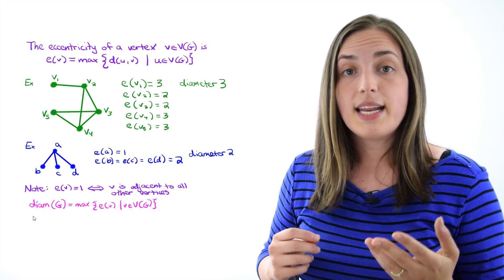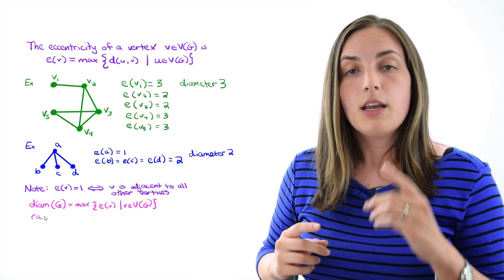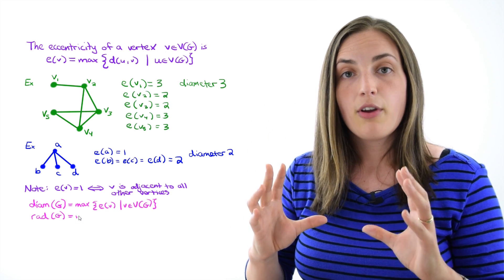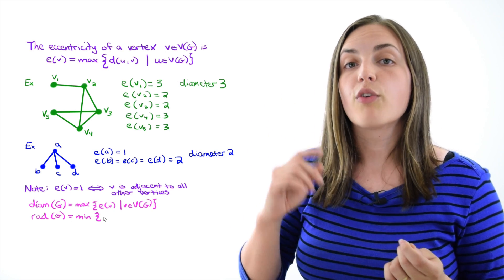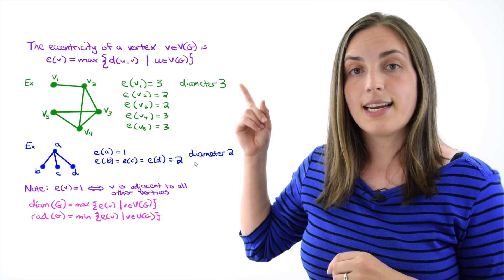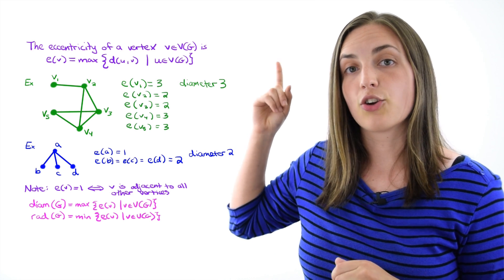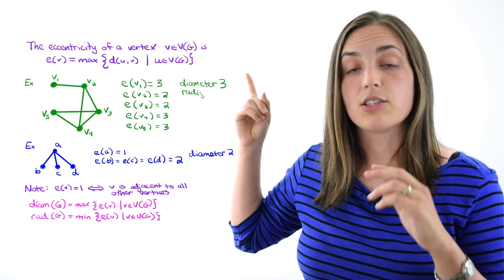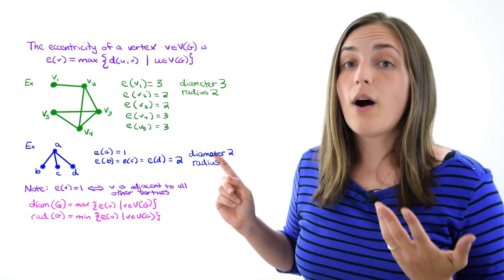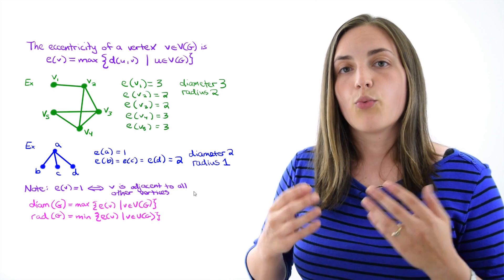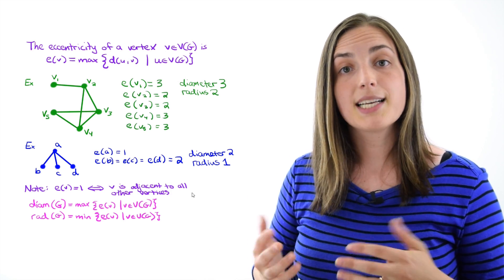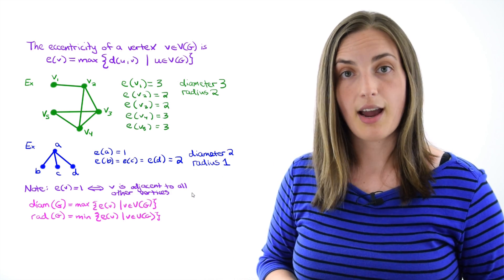The radius is similarly defined for a whole graph, but it equals the minimum over all of the eccentricities in that graph. Looking at our examples again, in the green graph the radius is two, and in the blue graph the radius is one. So radius and diameter are just a way of talking about the minimum and maximum over all the eccentricities in a graph.